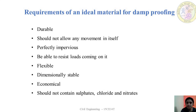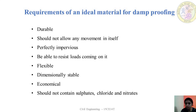To summarize, the material used for damp proofing should be durable, strong, steady, and perfectly impervious — not allowing any water or moisture to pass through it. It should be flexible, as seen in materials like bituminous felt and mastic asphalt. It should be dimensionally stable, economical, and must not contain sulphates, chlorates, or nitrates.